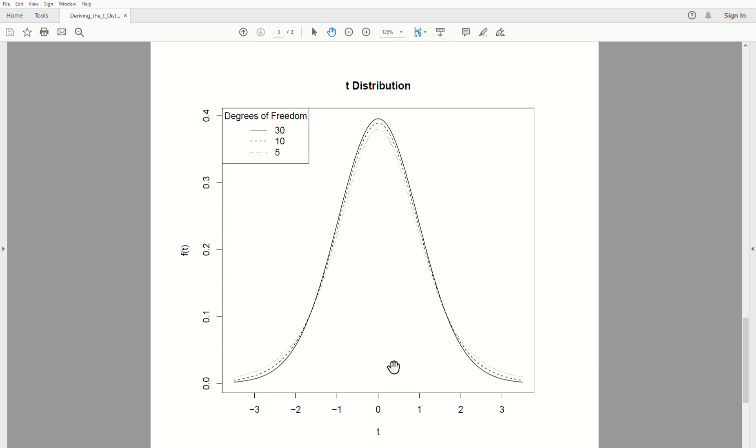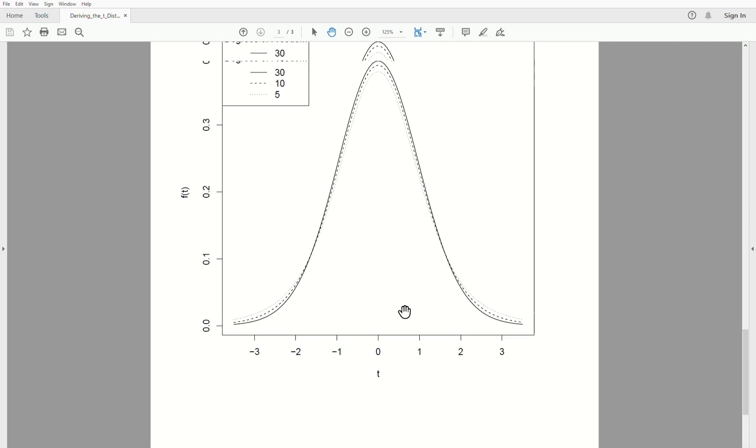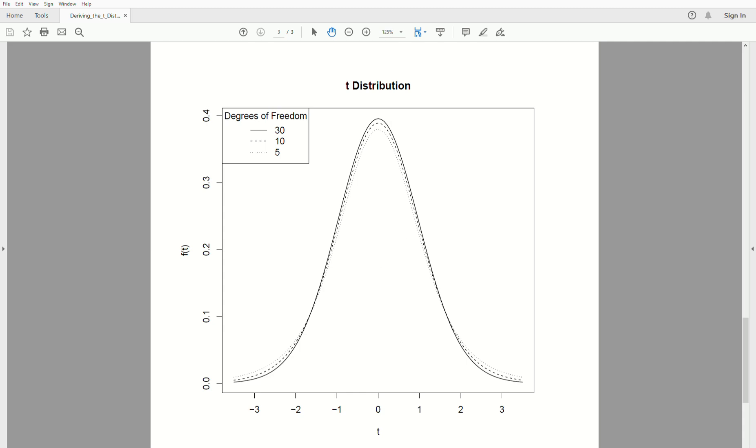But notice as the degrees of freedom increase, the tails get thinner, and it actually limits to a standard normal distribution. And I have a video on this channel that illustrates that limiting distribution of a t distribution. Okay, well that's all I have for this video. Hopefully you enjoyed that. I sure did. Please like the video and subscribe so you don't miss the next one. Thanks, bye.